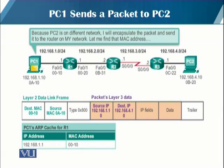In this example, PC1 sends a packet to PC2. Because PC2 is on a different network, PC1 encapsulates the packet and sends it to the router on its network. To do that, it needs to find out the MAC address of the router. The IP packet has a source IP, a destination IP, and is encapsulated in a link layer frame with destination and source MAC addresses. PC1 has an ARP cache for R1, which maps IP addresses to MAC addresses, so it can find the router's MAC address by looking up the ARP table.